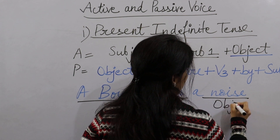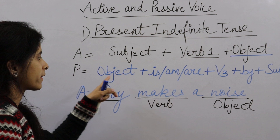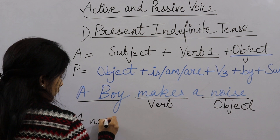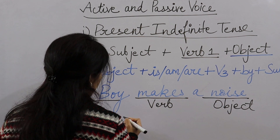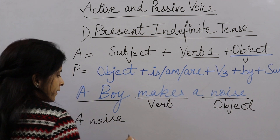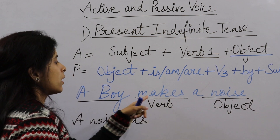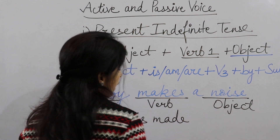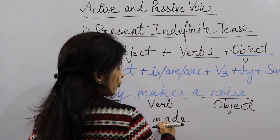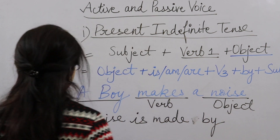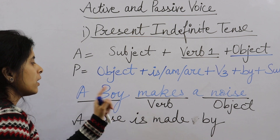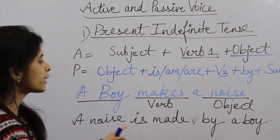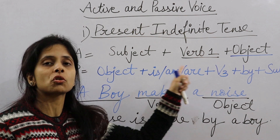Let's apply this rule with an example. The object here is 'a noise', so that comes first. Then from Is/Am/Are, we use 'is': a noise is. The verb 'makes' in third form is 'made': a noise is made. Then 'by', and the subject was 'a boy'. So the passive voice becomes: A noise is made by a boy.